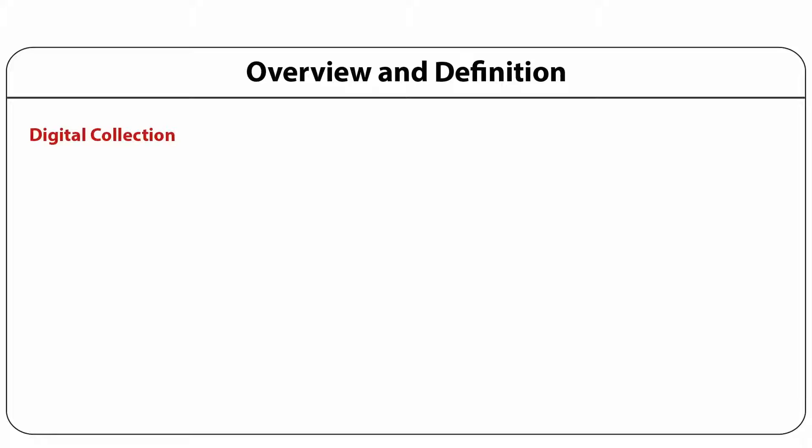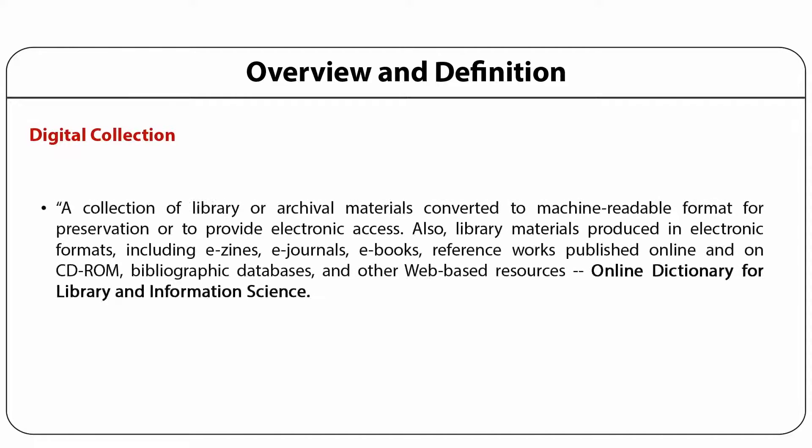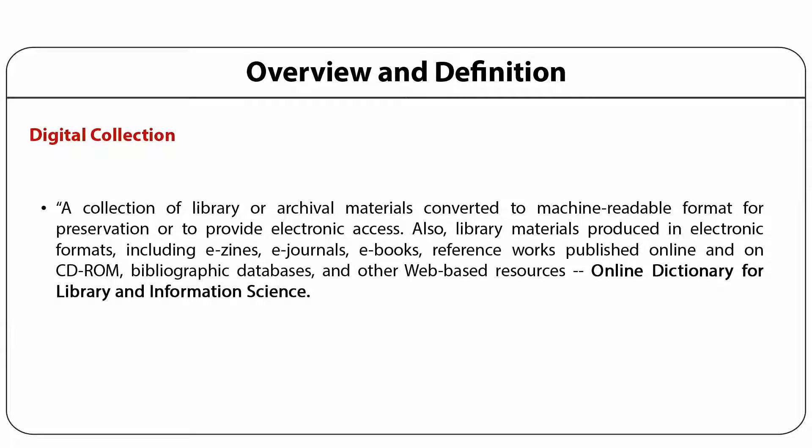As per the online dictionary for library and information science, digital collection is described as a collection of library or archival materials converted to machine-readable format for preservation or to provide electronic access. Also, library materials produced in electronic formats including e-zines, e-journals, e-books, reference works published on CD-ROM, bibliographic databases, and other web-based resources.